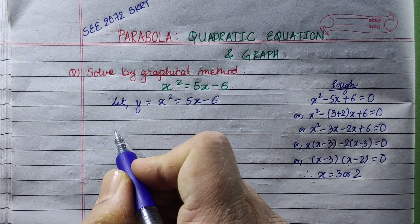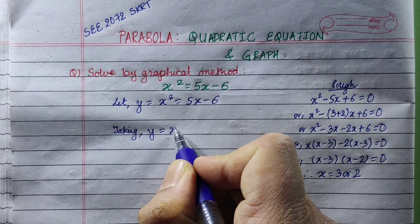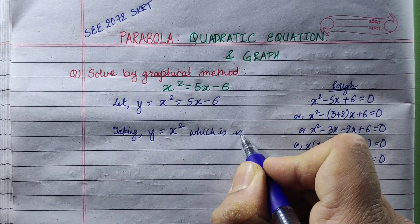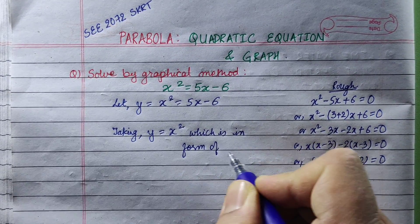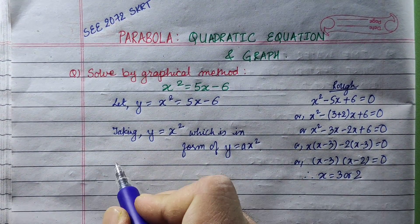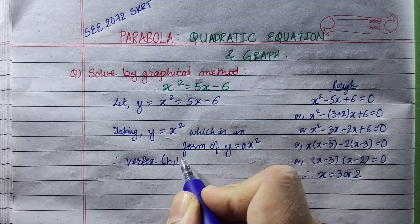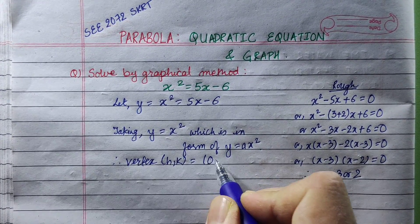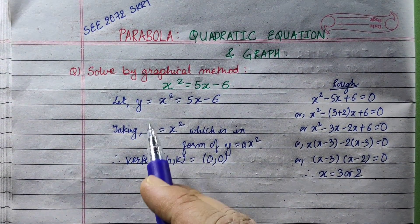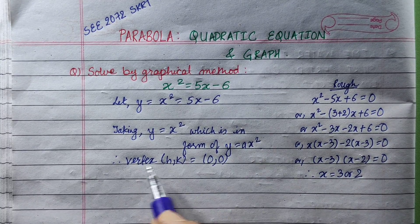Taking y equal to 5x minus 6, and taking y equal to x squared. You will see this is in the form y equals x squared. This is the vertex or turning point. The origin is the vertex. The form is y equal to x squared.